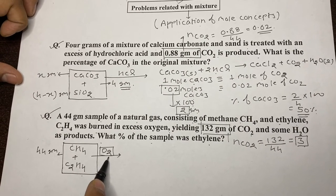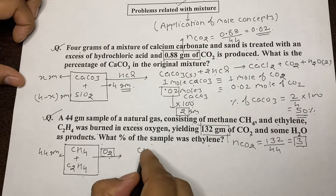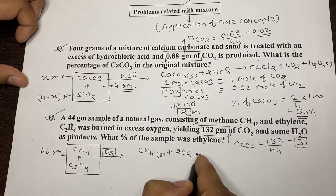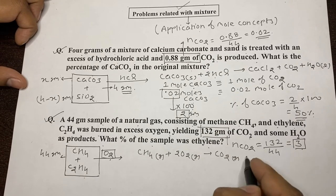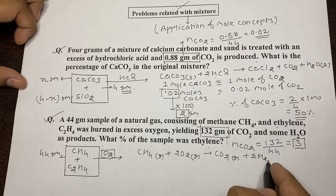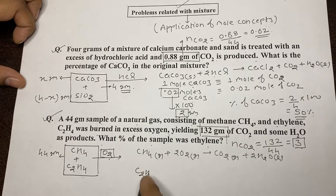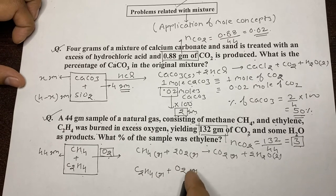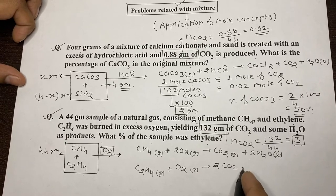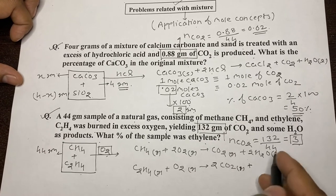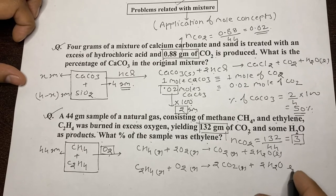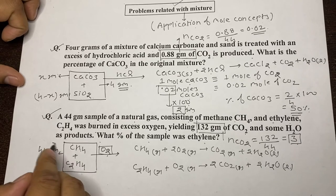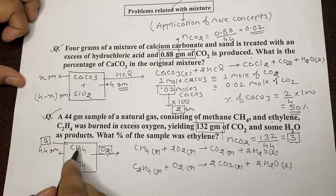Both components undergo combustion. We write the balanced chemical reactions: CH4(g) + 2O2(g) → CO2(g) + 2H2O(l), and C2H4(g) + 3O2(g) → 2CO2(g) + 2H2O(l).